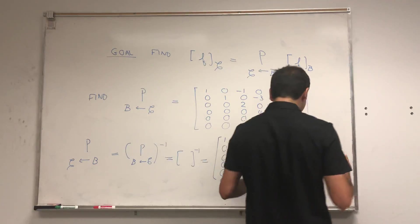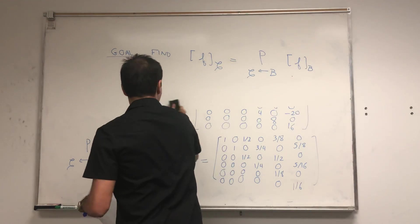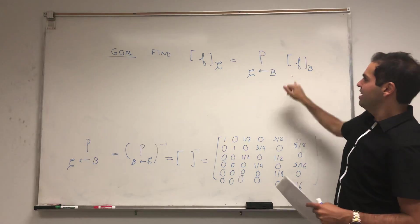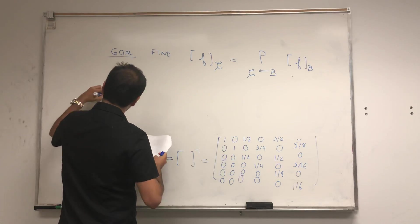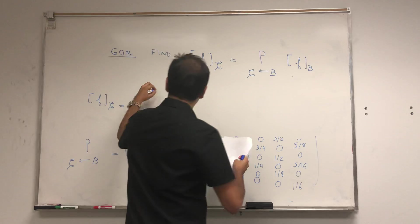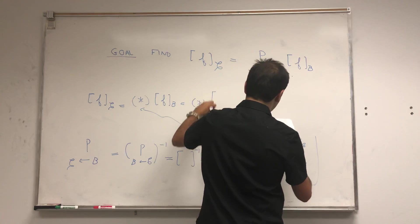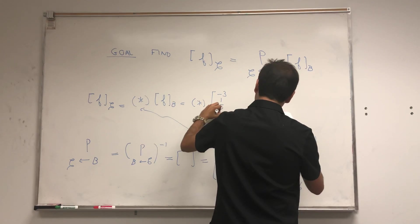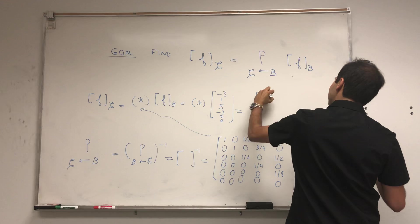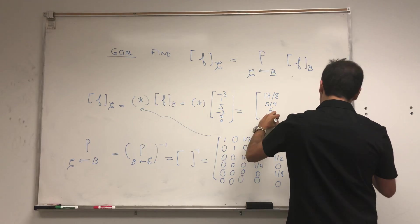We found this inverse matrix — call it (star). We don't need the original P anymore. To find f with respect to C, we just apply this matrix to f with respect to B: f_C = (star) × f_B = (star) × (minus 3, 1, 5, minus 3, 7, 4), and we ultimately get the vector 17/8, 5/4, 6, 1/2, 7/8, 1/4. We're just dealing with vectors here.